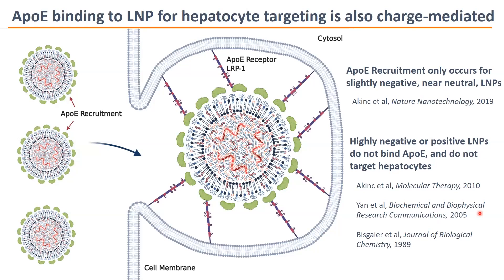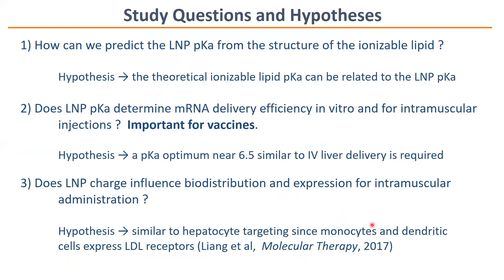Targeting to the liver has been known since 2010 — it's mediated by ApoE binding to the surface of the LNP. It's not always emphasized that this is charge dependent: a 2010 article showed that if you use a permanently cationic ionizable lipid, the ApoE binding doesn't occur and targeting to hepatocytes doesn't occur either. Earlier publications also showed that a highly negative lipid prevents that binding as well. So ApoE requires a slightly negative LNP for charge-mediated binding and hepatocyte targeting.